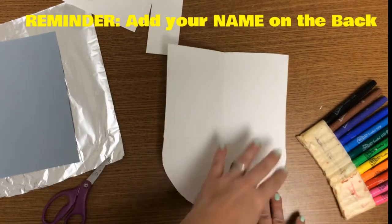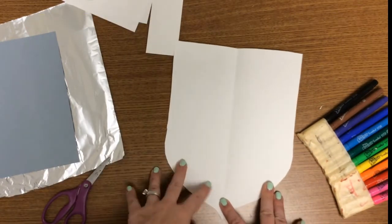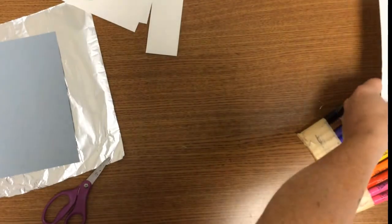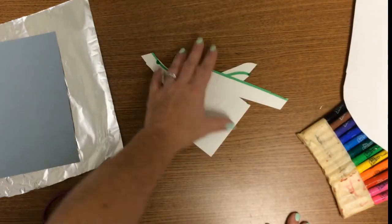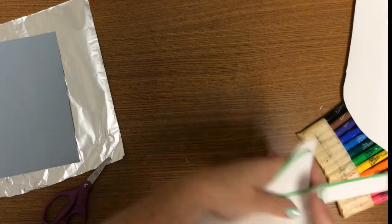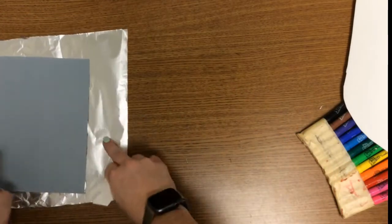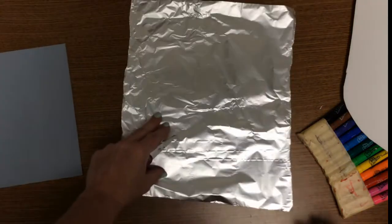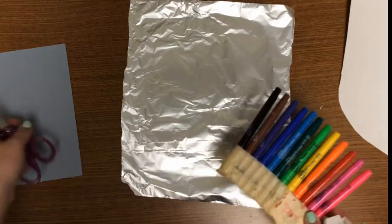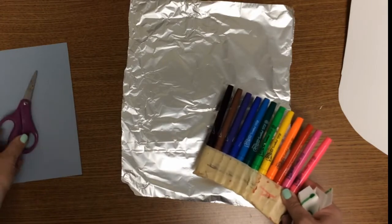Now we have our acorn shape all ready. I want you to set that aside. You're going to recycle your scraps so we get a nice clean desk area, and I'm going to come around with a piece of aluminum foil.